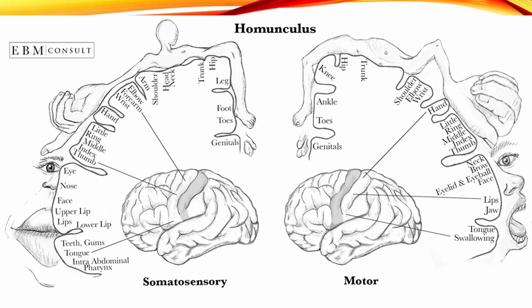The face, tongue, and larynx area are represented on the lowest part of the hemisphere. The body is represented essentially upside down on the hemisphere, and each cortex primarily controls the opposite side of the body.